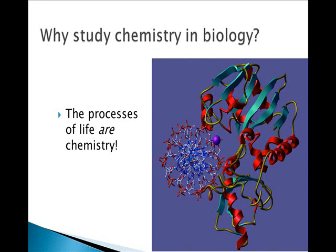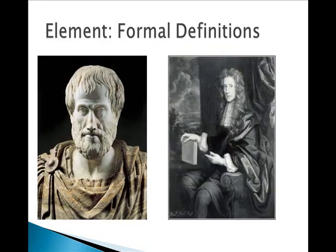The first thing that we look at with atoms, molecules, bonding, etc., is what an element actually is. There are two basic formal definitions of what an element is. Aristotle, who lived from 384 to 322 BC, said that everything is either an element or composed of elements. An element is that into which other bodies can be resolved, and which exists in them either potentially or actually, but which cannot itself be resolved into anything simpler or different in kind. That's a bit wordy.